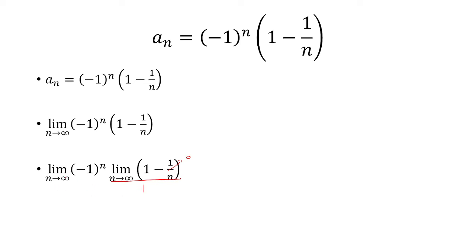It's really the limit as n approaches infinity of (-1)^n, and this one oscillates between -1 and 1, so the limit does not exist.